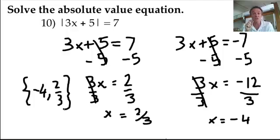Because I put one of those equations, the 3x plus 5 part, equal to 7. But I also put the 3x plus 5 equal to negative 7. Okay. That's it.